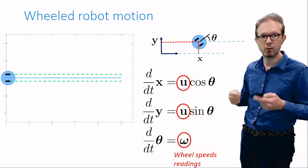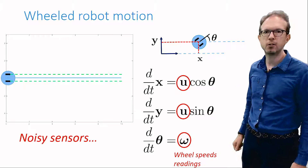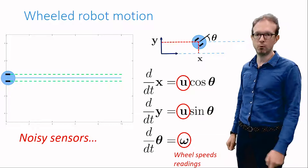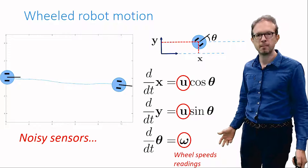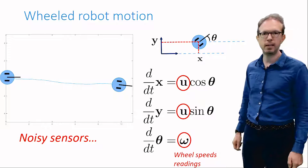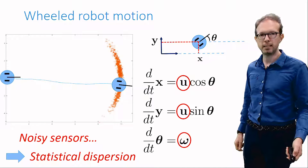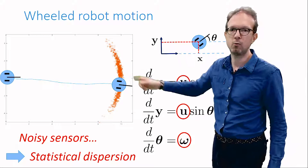To show it, we could constrain the robot to move on rails to make it travel a straight line and look at what the imperfect sensors measure. Although the true motion is a straight line, this is the kind of motion the sensors measure. Random errors accumulate and deviate the measured motion from its true path. If we perform this experiment many times, we see the endpoint in terms of position varies owing to the randomness of sensor noise.